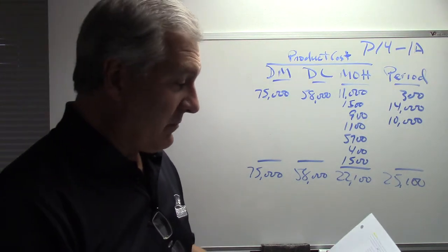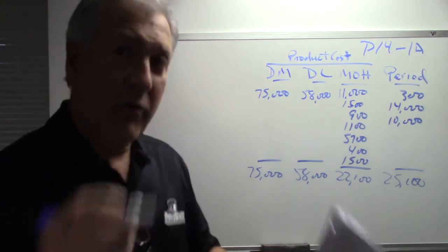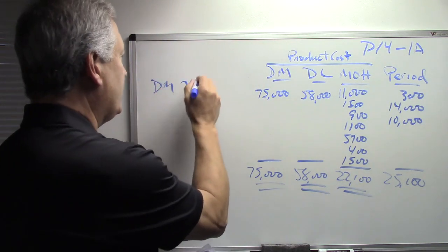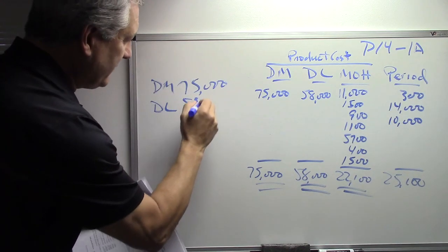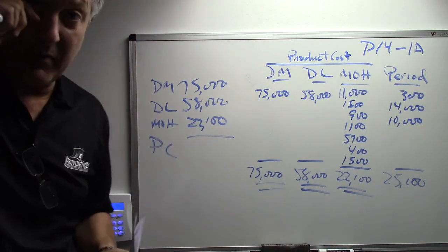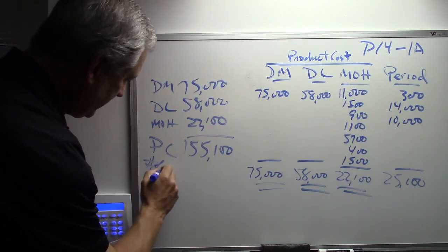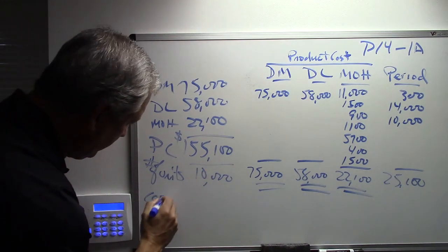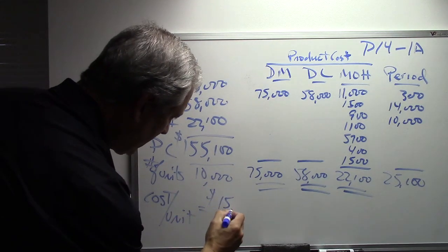The next part of this problem asks us to compute the cost to produce one unit — the cost per unit, or the product cost per unit. Product cost is made up of direct materials ($75,000), direct labor ($58,000), and manufacturing overhead ($22,100), giving a total product cost of $155,100. With 10,000 units, cost per unit equals $155,100 divided by 10,000, which is $15.51.